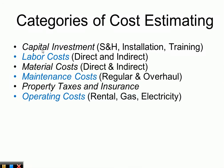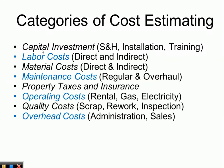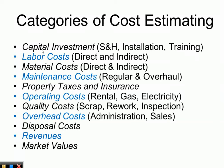Operating costs, for example rental, gas, and electricity, go into operating costs. Quality costs include scrap, rework, and inspection. Another category is overhead costs, including administration and sales, and also disposal costs. Then we have revenue costs — sometimes there are costs associated with revenues — and market values, which is another category of cost estimation.